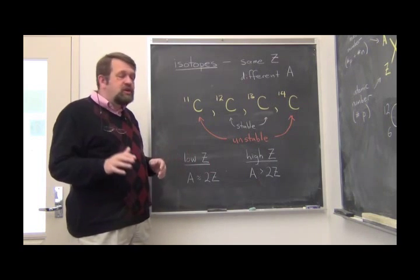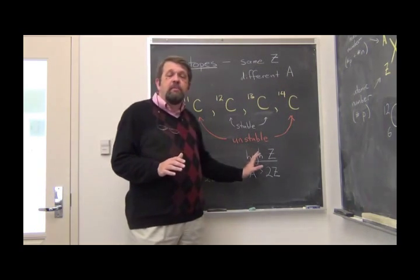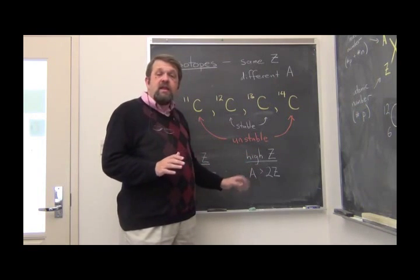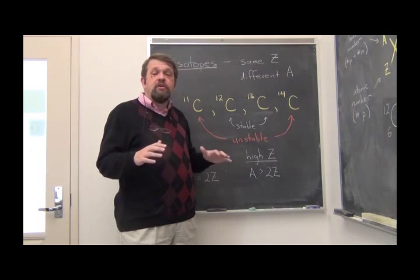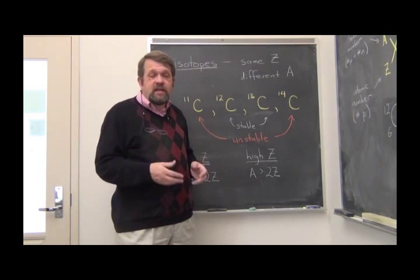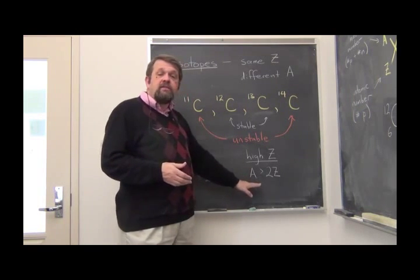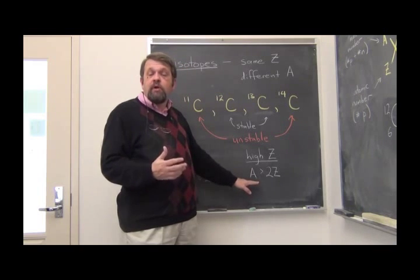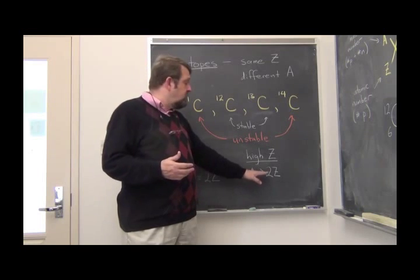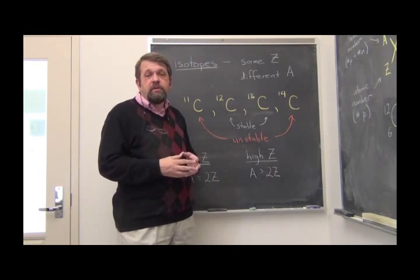The rule of thumb we can impose here is that for a nucleus to be stable, if its Z, if its atomic number is fairly low, less than about 20, then the number of nucleons needs to be about twice the number of protons. That is to say, the number of neutrons and the number of protons needs to be roughly equal. 6 protons and 6 neutrons, 6 protons and 7 neutrons, that's stable. But if you have too many neutrons or too few neutrons, the element will be unstable.